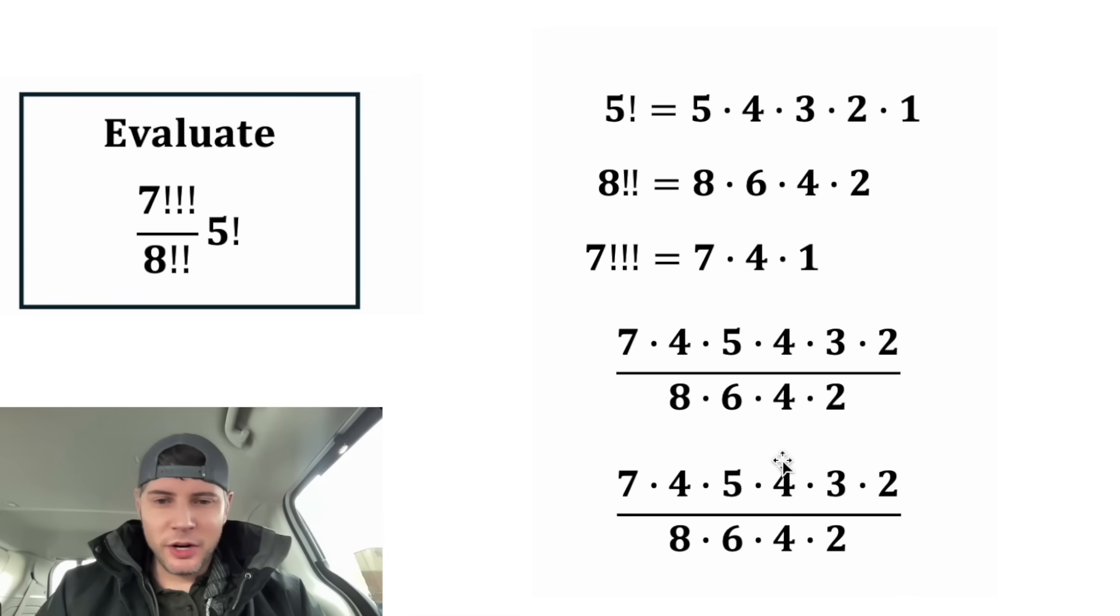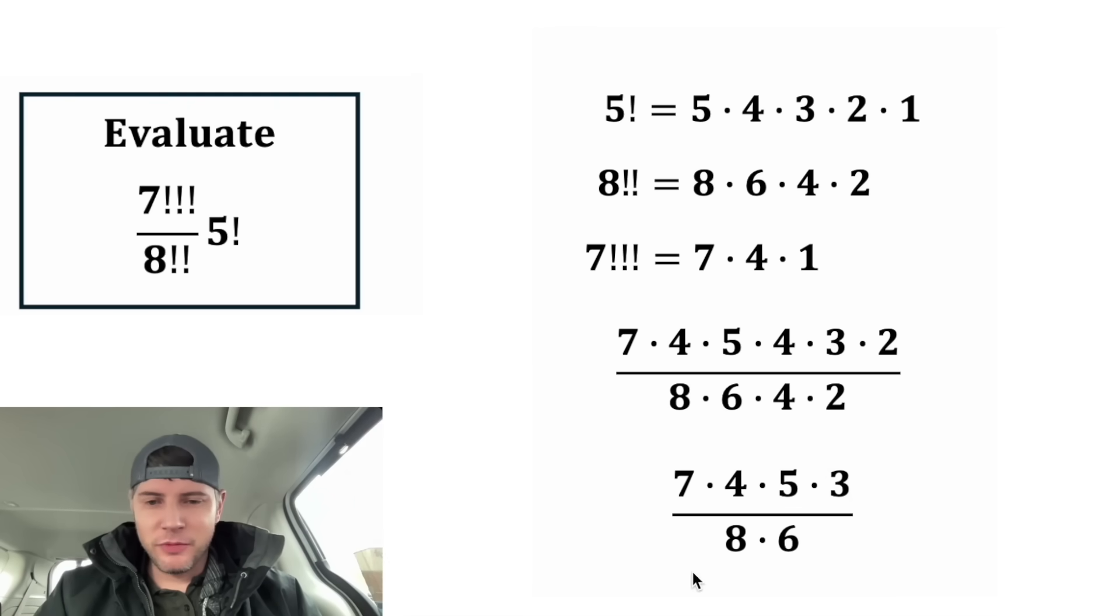Now let's simplify things. This is the fun part. This 4 on top and 4 on bottom can cancel each other out. And this 2 on top and this 2 on bottom can cancel each other out. And now we can change this 8 into a 4 times 2, and this 6 into a 2 times 3. And these two 4s will cancel each other out, and these two 3s will cancel each other out.